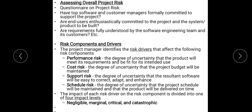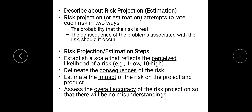Next is Risk Projection. Risk Projection is essentially estimation — it attempts to rate each risk in two ways: the probability that the risk is real, and the consequence of the problems associated with the risk if it occurs. The steps in estimation are: establish a scale from 1 to 10 for the likelihood of the risk occurring, then think about the consequences, then think about the impact, and finally assess the overall accuracy of the risk projection.